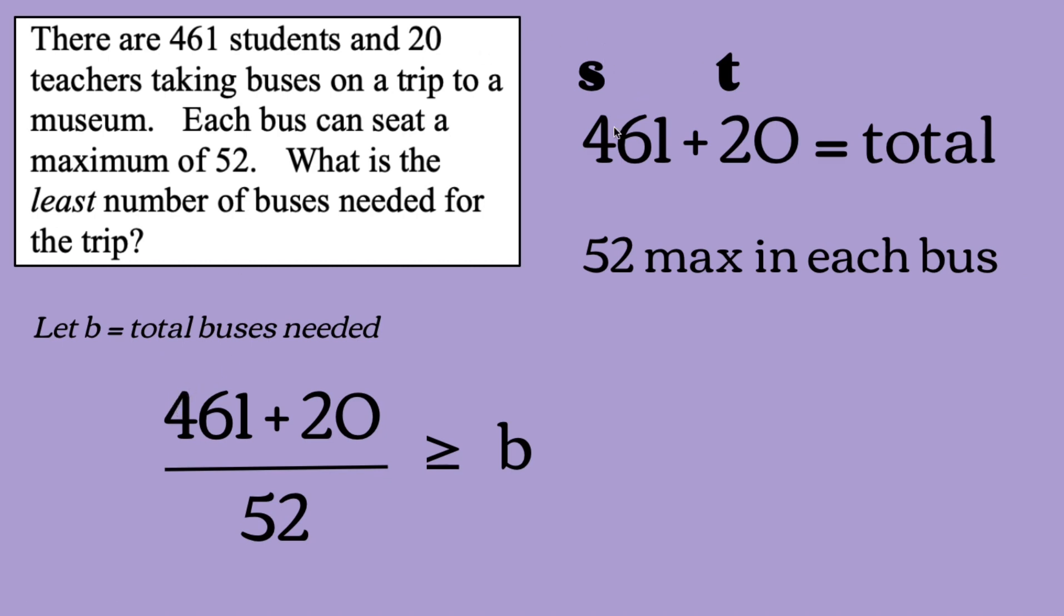We're going to add our students and teachers, 461 plus 20. And then dividing that by 52 to get the number of buses. Because this is the number of people total, and this is the number of people that each bus can seat. So we're going to use greater than or equal to. Because the number of people will obviously be a lot more than the people, than the number of buses. Sorry, that's not what they're saying. The number of people in each bus will be greater than the number of buses, and they ask for the least number of buses needed for the trip. So it can also be greater than, just in case this adds up to an even amount, and they will all go into the same number of buses.